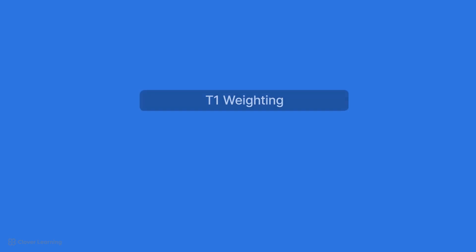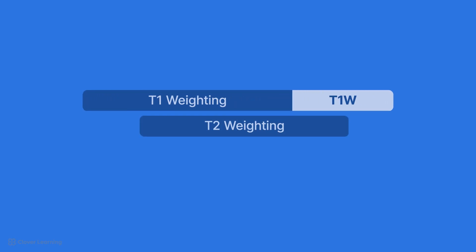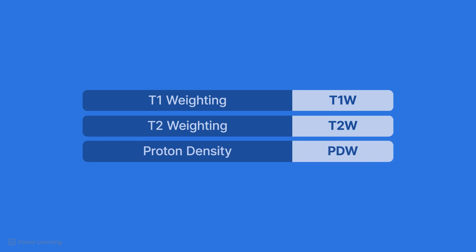Weighting emphasizes specific properties of tissues, making it easier to distinguish between healthy and pathological areas. In this lesson, we will be discussing T1 weighting, written as T1W, T2 weighting, written as T2W, and proton density, PD weighting, written as PDW.